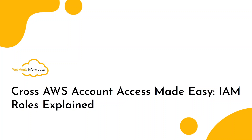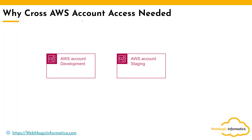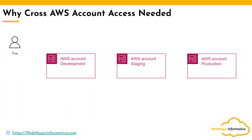Hello everyone. In this video we are talking about how to do cross-account access using IAM roles. Before we talk about what cross-account access is or why it is needed, let's first look at a problem statement. Let's say you have multiple AWS accounts — one for development, one for staging, one for production — and you have one person, Tim, who would be managing all these accounts. He's a cloud engineer managing the development, staging, and production accounts.